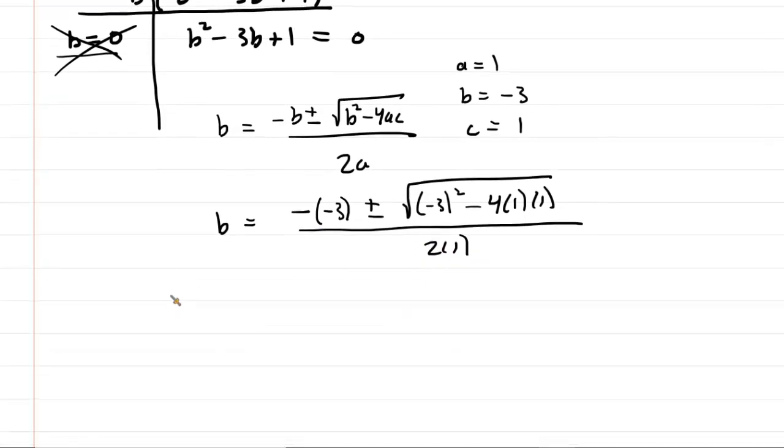This will simplify a little bit. We have b is equal to 3 plus or minus the square root. Let's see. Underneath the square root, we've got negative 3 squared. That's just 9. 9 minus 4, because 4 times 1 times 1 is 4. 9 minus 4 is 5. So 3 plus or minus square root of 5 all divided by 2.